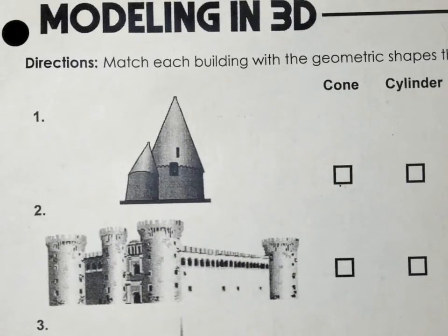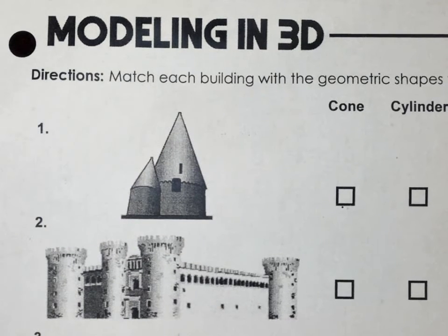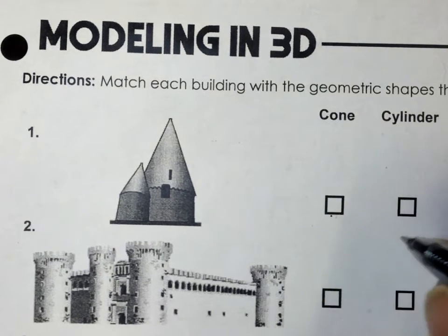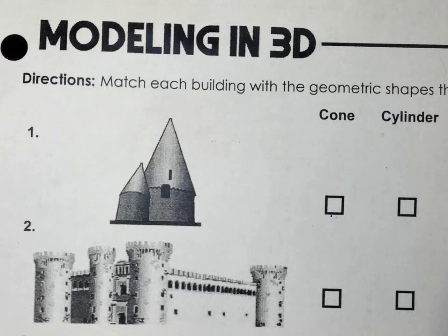We're modeling in 3D. Very easy to do. Match each building with the geometric shapes that can be used to model it. I always start with Trenton, so I might as well. Trenton, number one - what shapes do you see?